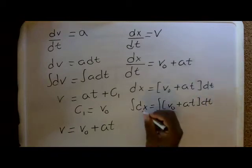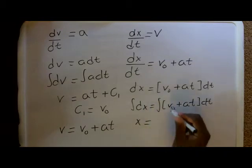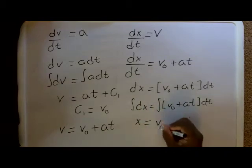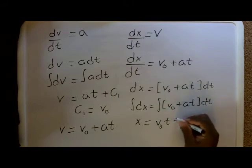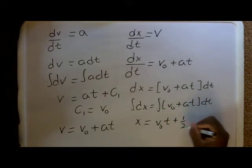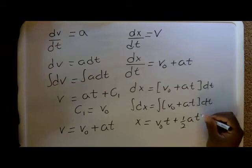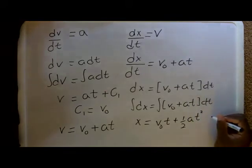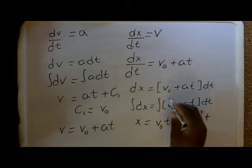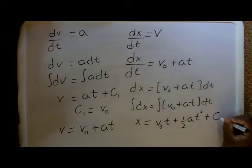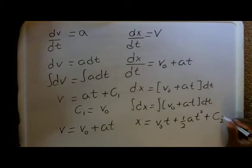This becomes x, which is displacement or the position. This would become v0 times t plus 1/2 acceleration times time squared plus another constant, because it's indefinite integral. We'll call this constant C2. C2 is just an initial position.